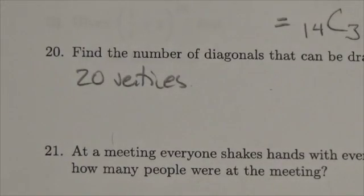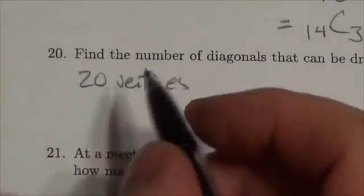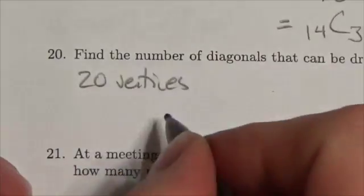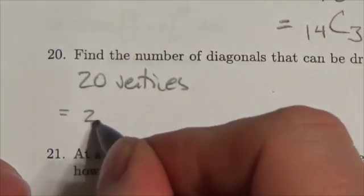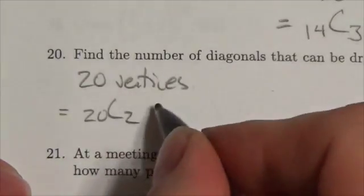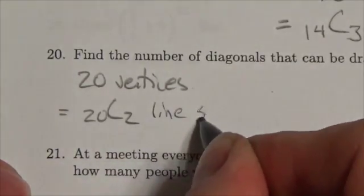So to connect them, if we connected them all, kind of paired up all of the vertices, this would give us a total of 20 choose 2 line segments that could be drawn.